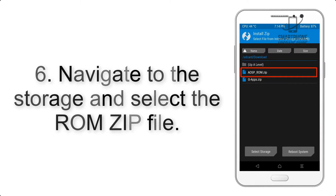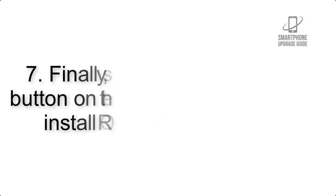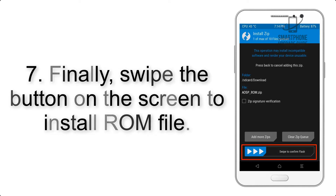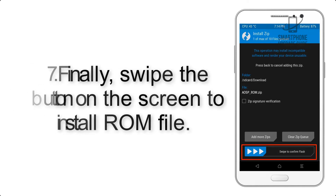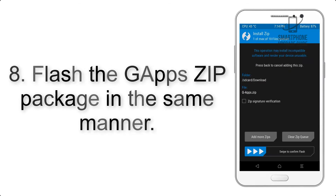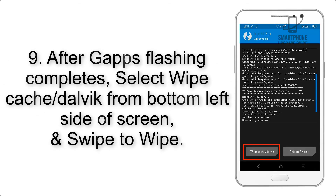Step 5: Go back to the recovery main screen and tap on the Install button. Step 6: Navigate to the storage and select the ROM zip file. Step 7: Finally, swipe the button on the screen to install the ROM file.